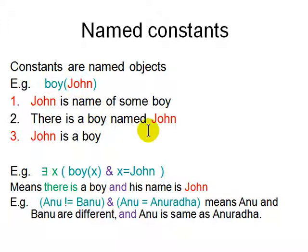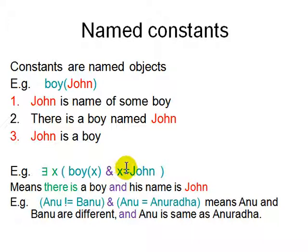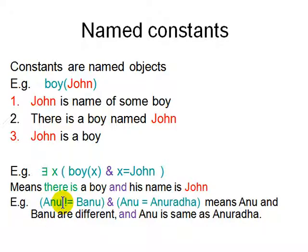So everybody has a name but there are too many people so we just use variables. There is a boy named John — there are many ways to write it. We write: There exists X such that Boy(X) AND X = John. This assumes there is an equality operator; sometimes there is no equality operator, but we add it to write things like this. We also need equal-to and not-equal-to to talk about two objects, for example: Anu is not equal to Banu, but Anu equals Anurada — meaning they are two different people but Anu is the same as Anurada.